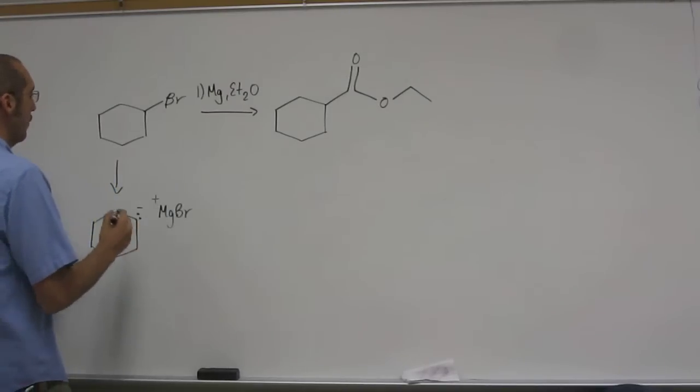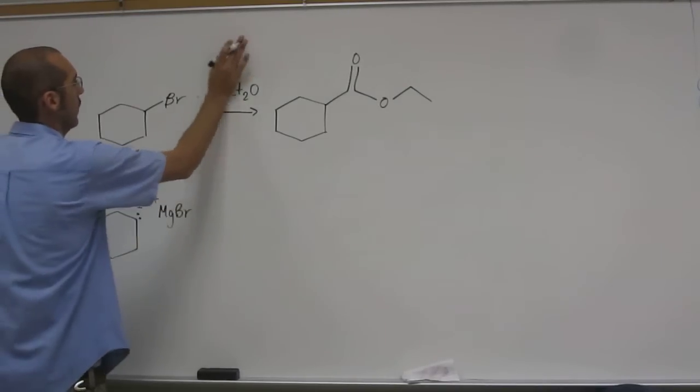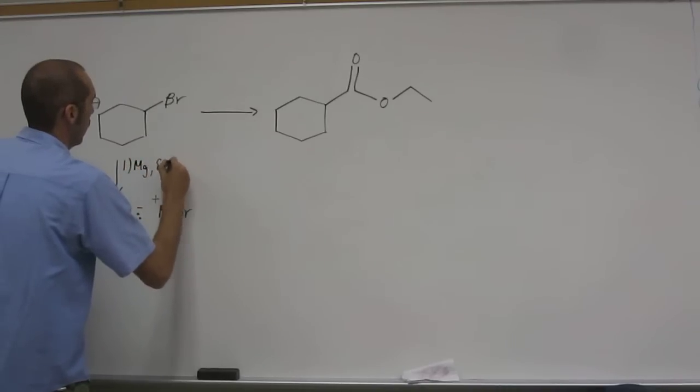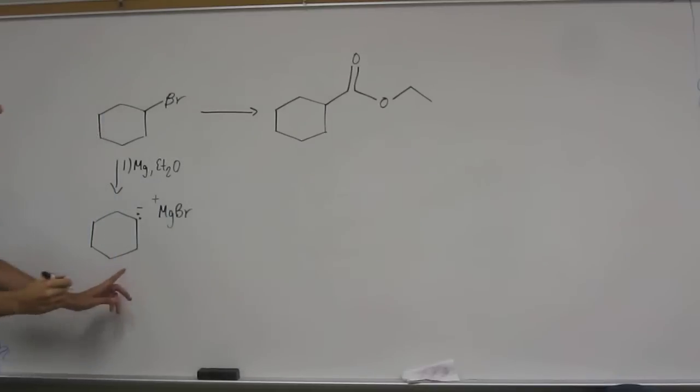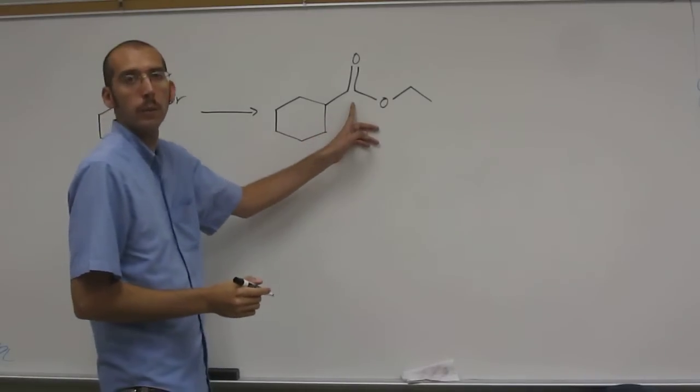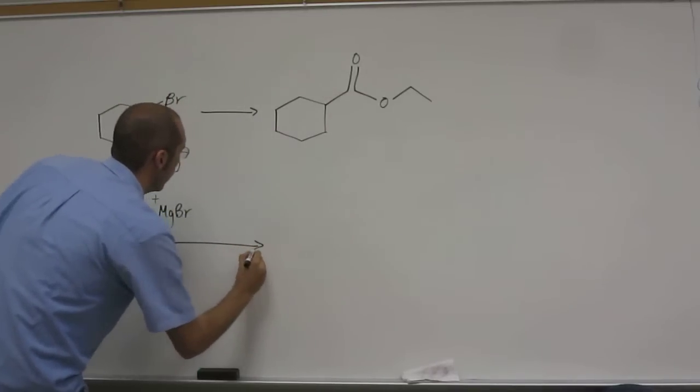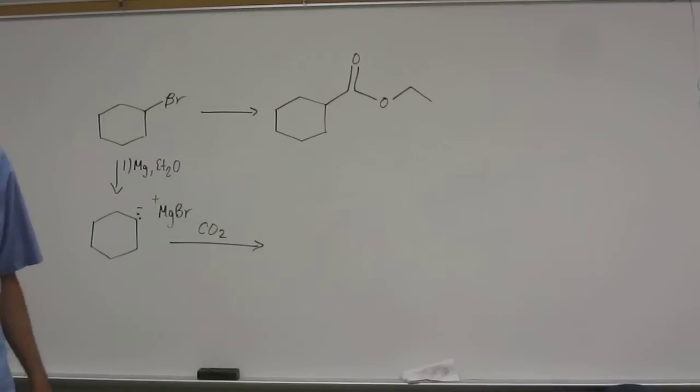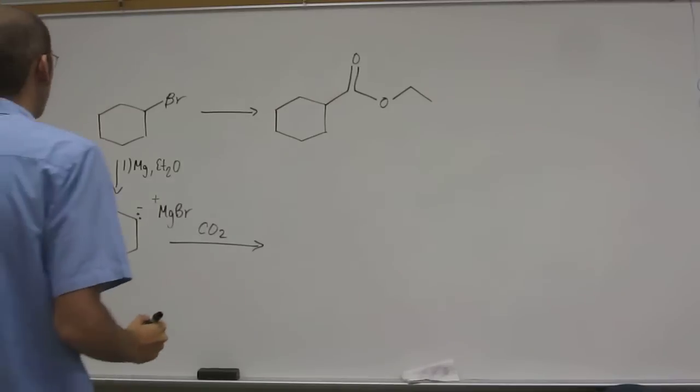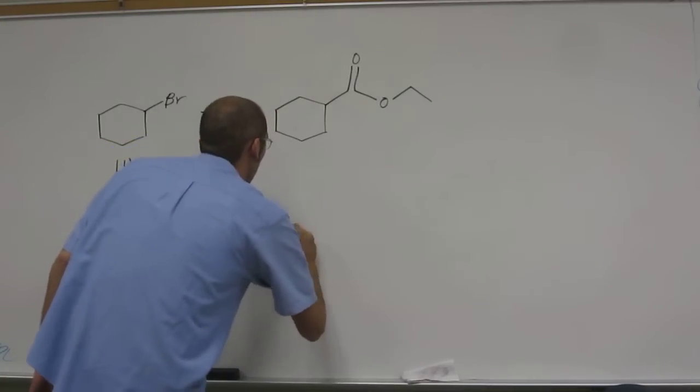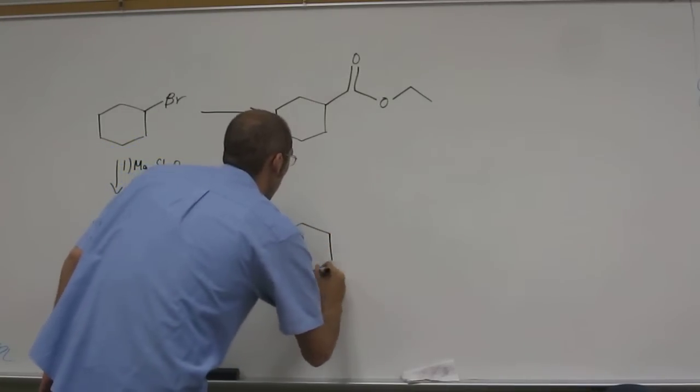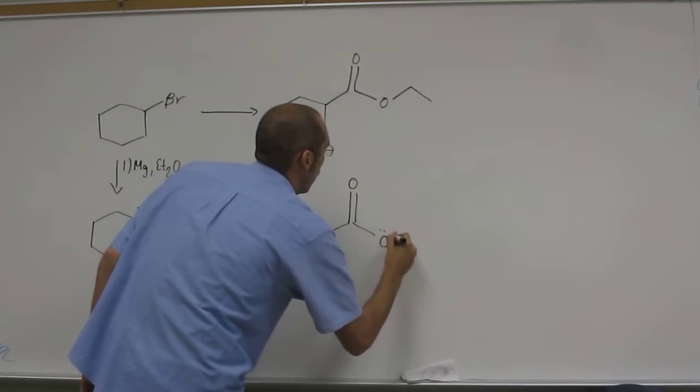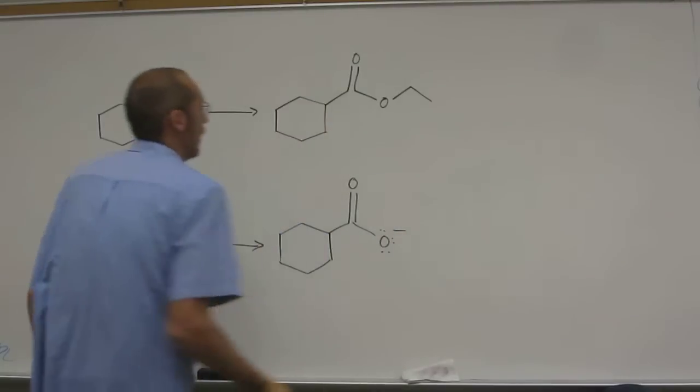So the second step is going to be, well, let's write this as the first step over here. So the next step is you want to add that carbonyl group, right? So in order to do that, remember, just add carbon dioxide. And that'll give you the carboxylated anion. Like that.